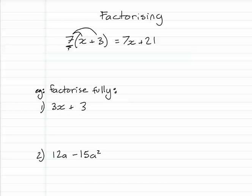That is expanding. Factorizing is looking at the two or more terms that we have here, finding the highest common factor, in this case it's 7, putting it outside the brackets, and leaving inside the brackets the remaining factors. So going from the brackets to expanded form is expanding. Going from expanded form back into brackets is factorizing.